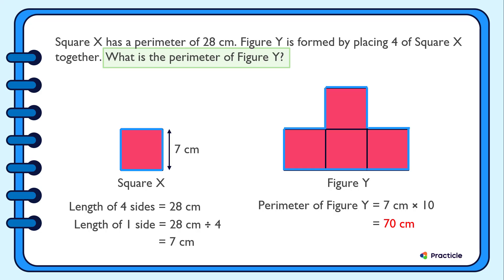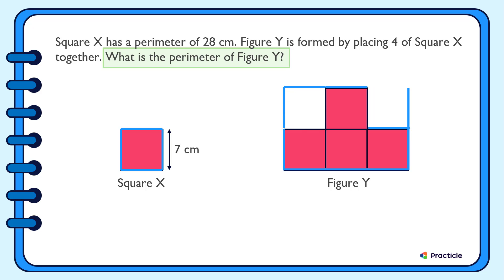Is there another way to solve this? Yes. Another way to find the parameter of Figure Y is to try to move these sides outwards so that the parameter is actually in the shape of a rectangle. Do you see that? Once we have the rectangle, we can add the length and the breadth of the rectangle to find the parameter.